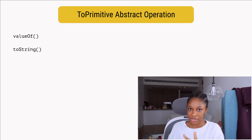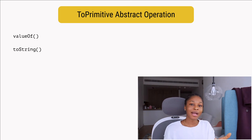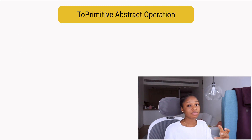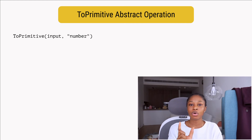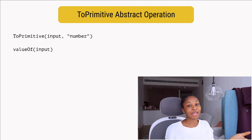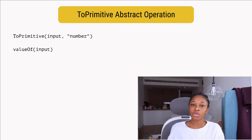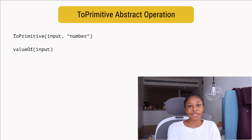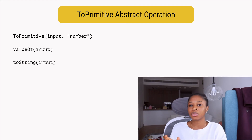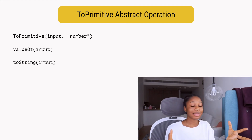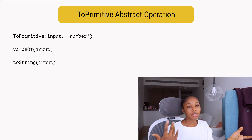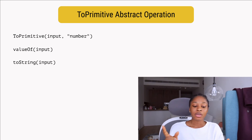If the number hint is sent, ToPrimitive will call the valueOf method first. If the returned value is a primitive, it will use it. If it's not a primitive, valueOf returns the value back, and then ToPrimitive will call the toString method. If toString returns a primitive, it uses it. If it still doesn't get a primitive, it results in a TypeError.